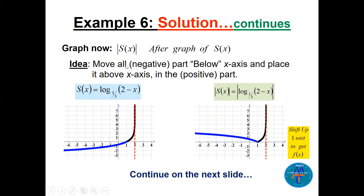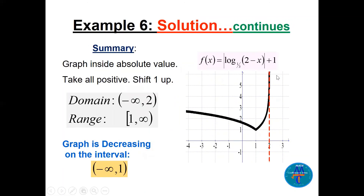Finally, shift |s(x)| up 1 unit to get f(x) = |log base (1/3) of (2 − x)| + 1. The domain is (−∞, 2) open, the range is [1, ∞) closed at 1, and the graph is decreasing on (−∞, 1).